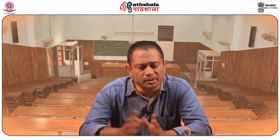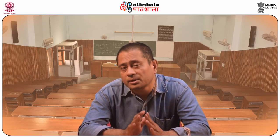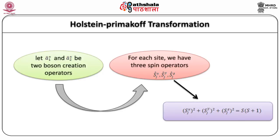What exactly is the Holstein-Primakoff transformation? It can be done using the Schrödinger representation, where you replace the spins by bosonic operators. We wish to express the magnon creation and destruction operators in terms of the spin operators. In this new representation, the spins are represented by Bose operators.